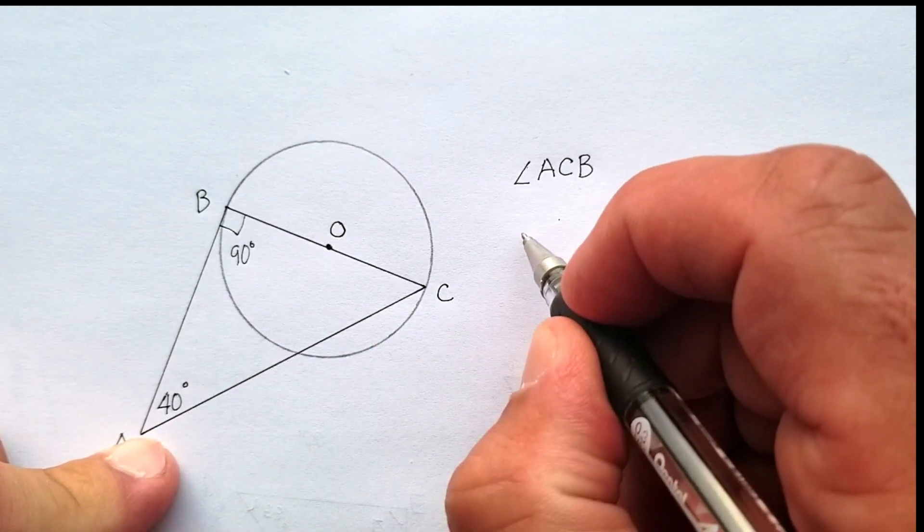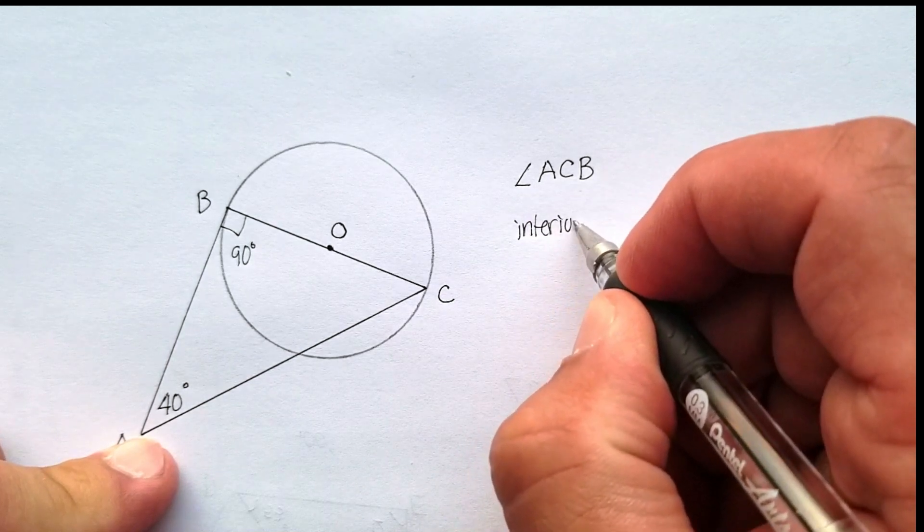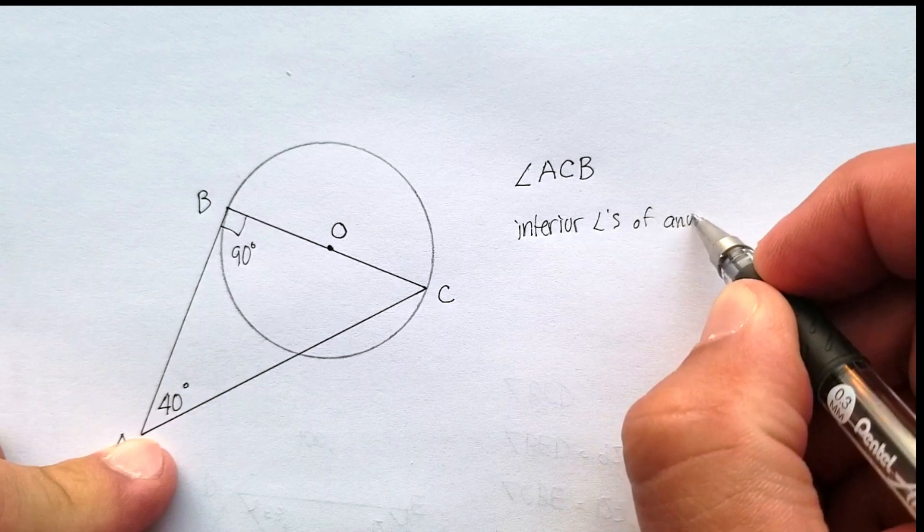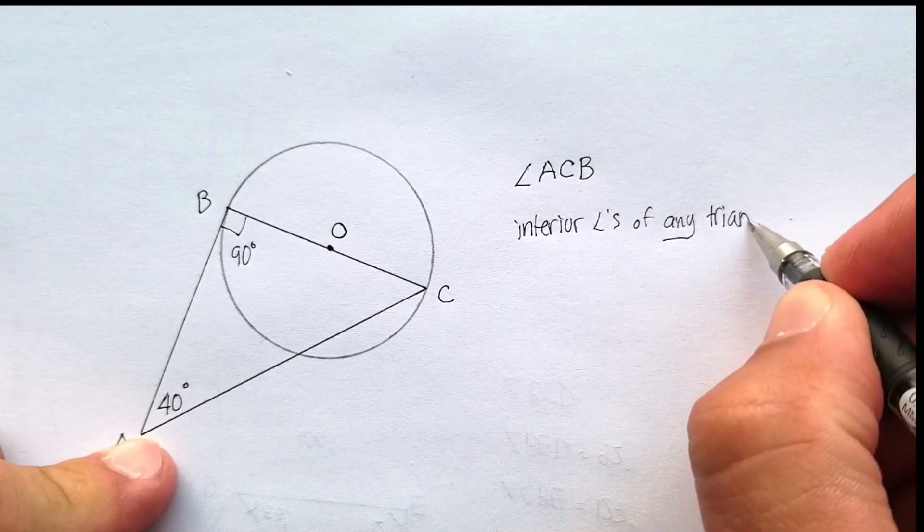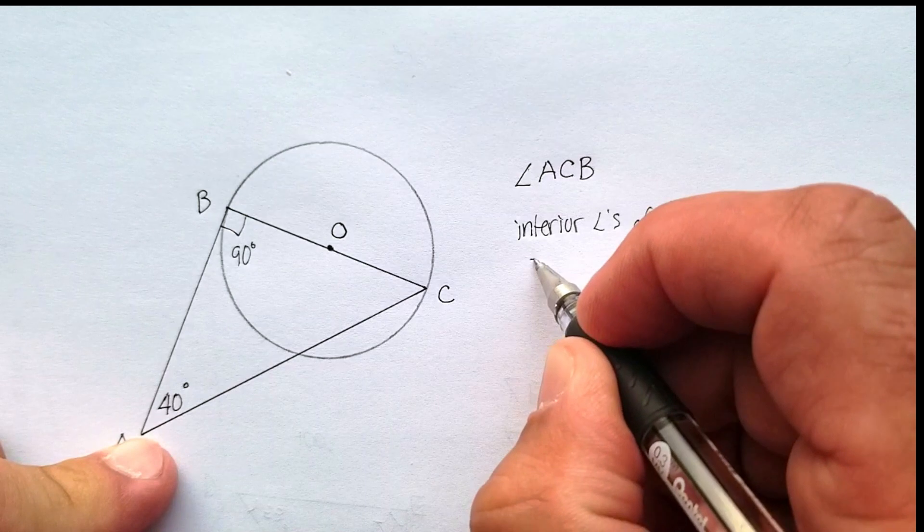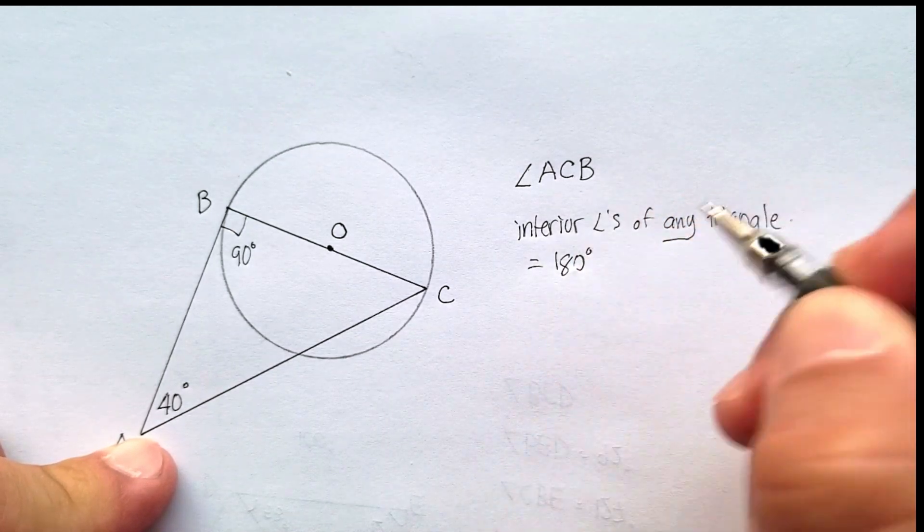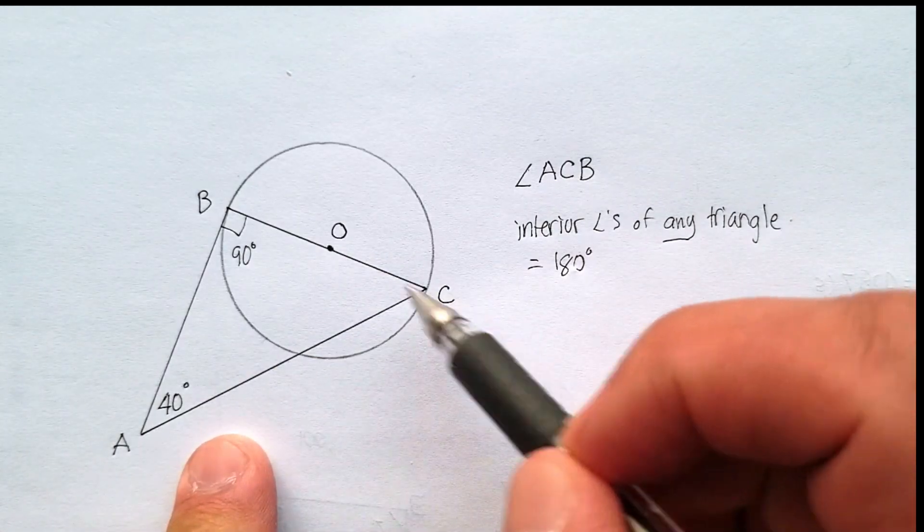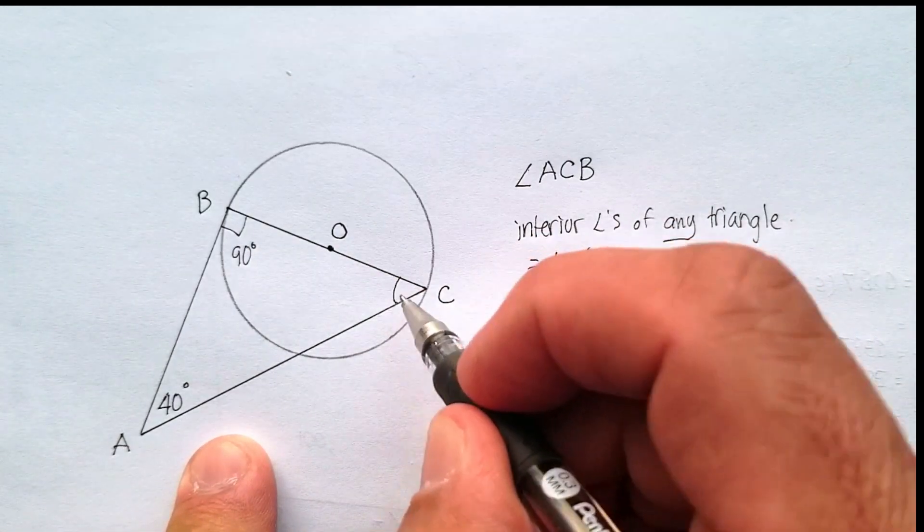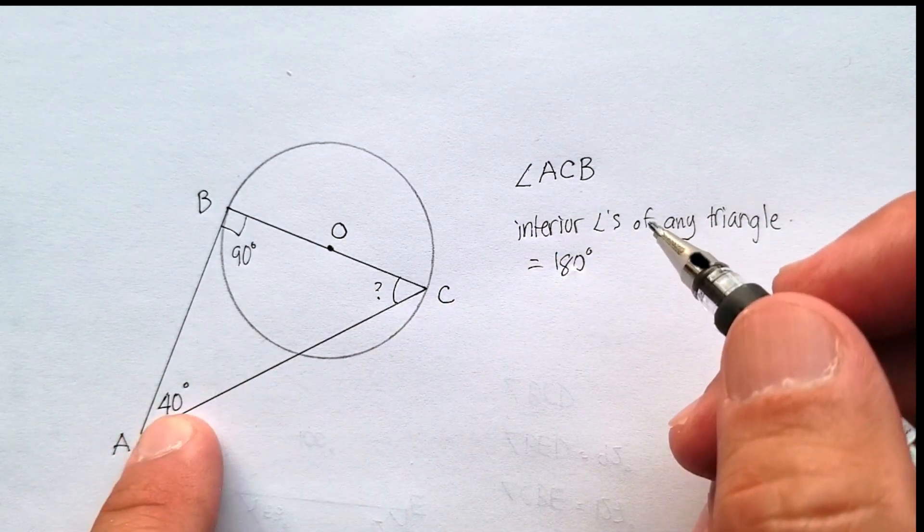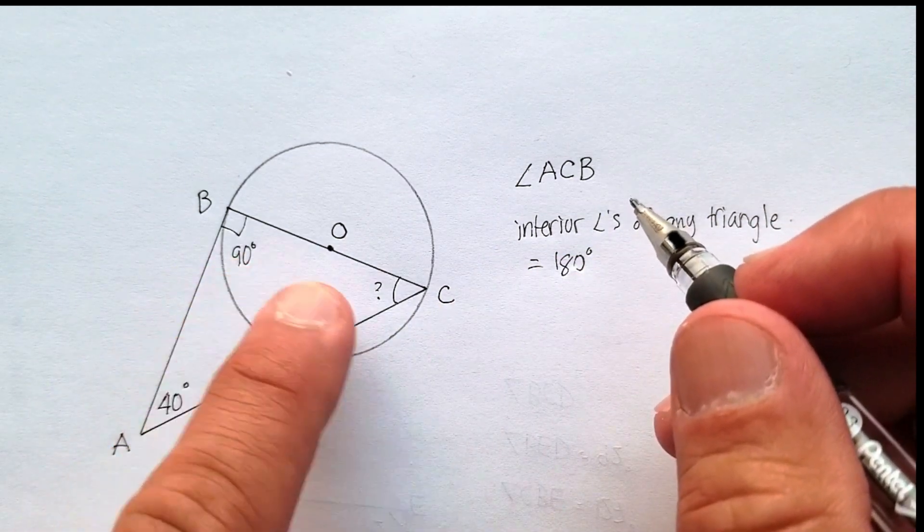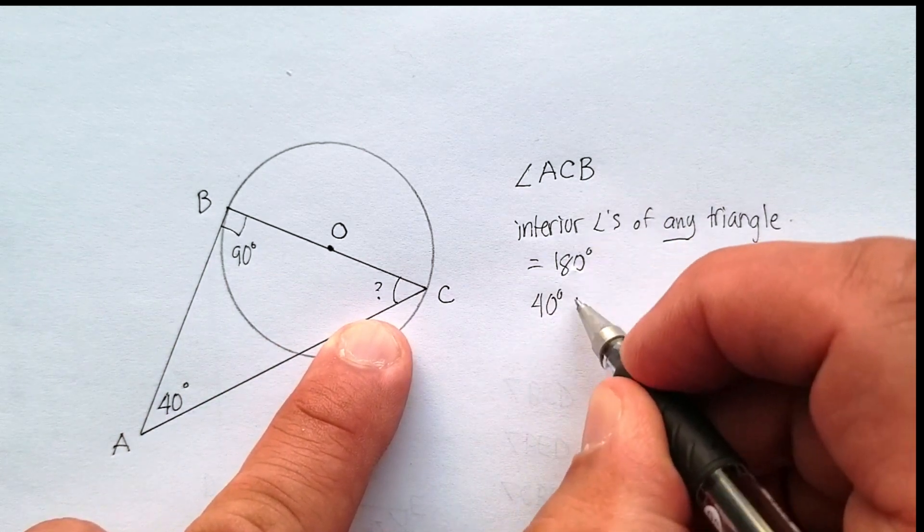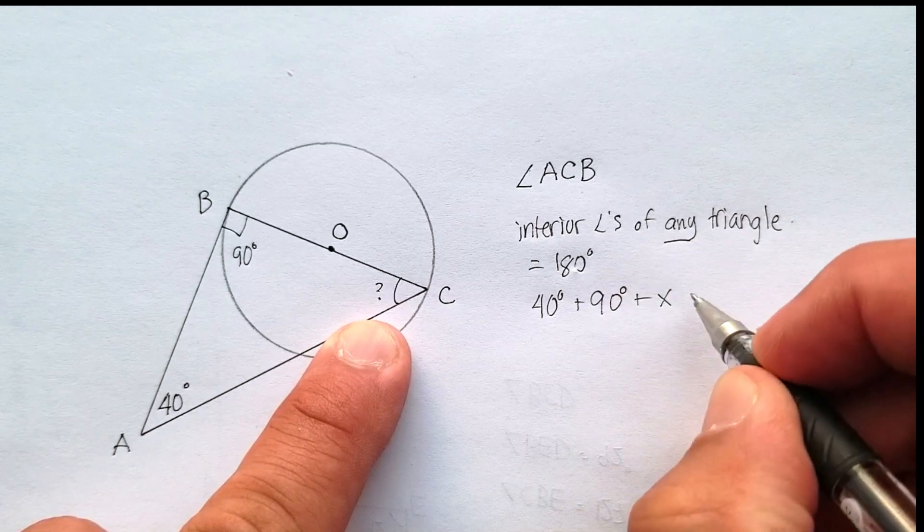Okay? So interior angles of any triangle equals 180 degrees. We happen to know these two. So we know that angle A-C-B, this angle right here, which is one that we're looking for, should be equal to 40 plus 90 plus X, which is my unknown.